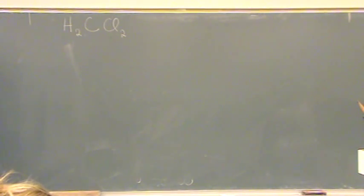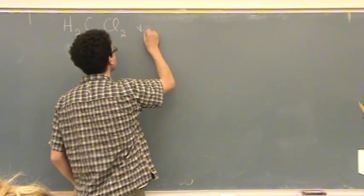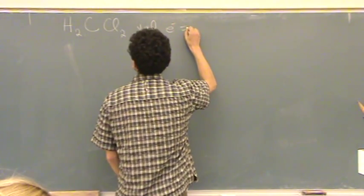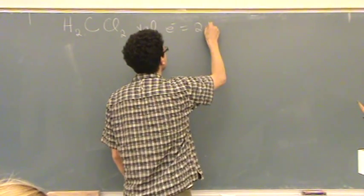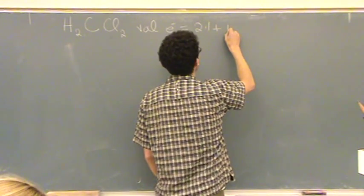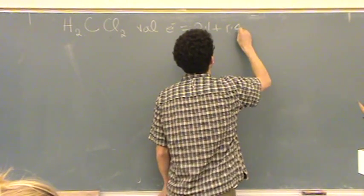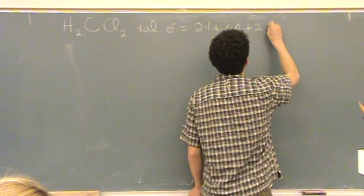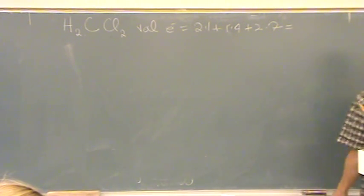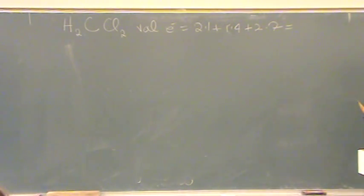Halogens are almost always on the outside, terminal. So chlorine's a halogen, and hydrogen is almost always terminal. So for many reasons you can put that carbon in the middle. First though, we need the valence electrons. That's equal. There's two hydrogens in column one, there's one carbon in column four, and there's two chlorines in column seven. That's fourteen, and another four is eighteen, nineteen, twenty.